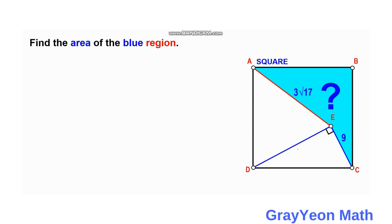We have this square ABCD, and inside ABCD is a blue region bounded by segments AB and BC, which are the sides of the square, and segment AE with a measure of 17 units, and segment EC with 9 units. There is also an unknown length of this right triangle ADC, with its hypotenuse being DC, which is the side of the square. We are required to find the area of this blue region.